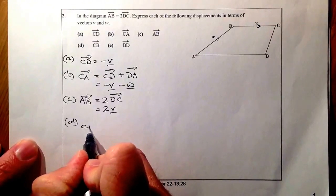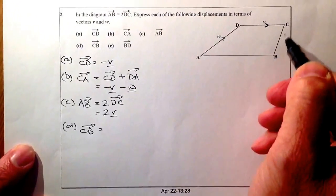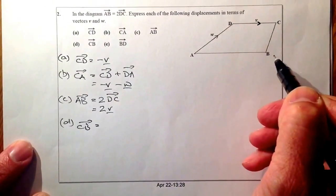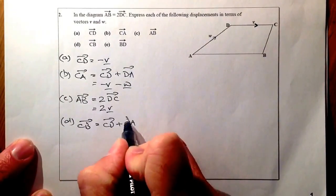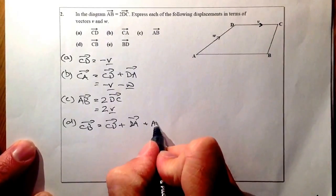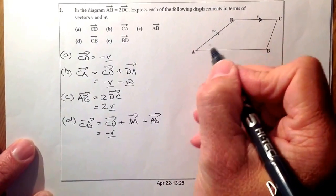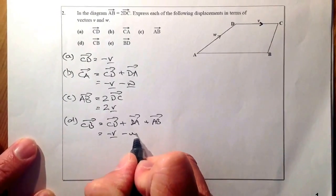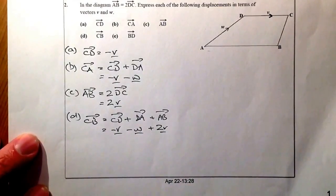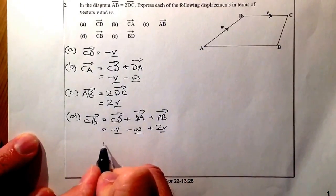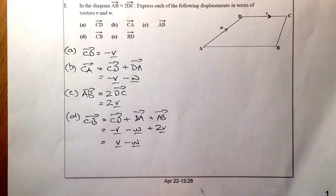Part D, we're looking at the vector CB in terms of V and W. So C to B. I don't really know much about that at all, but I do know something about all the way around from there. So let's choose that alternative route. So we'll go from C to D. I'll go from D to A, and then I'll go down from A to B. C to D is minus V, opposite direction. D to A is the opposite direction for W, so it's going to be minus W. And from A to B, we already know that that's going to be 2V, and it's in the correct direction, so that's going to be positive. So let's tidy these things up here. So 2V minus V is just going to give me V minus W. And that's going to be the answer for that one.